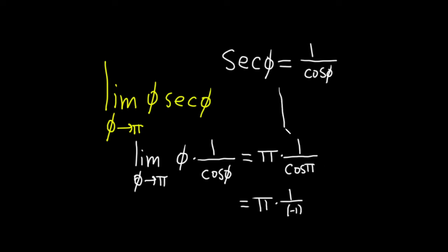On the unit circle, every ordered pair is of the form cosine theta, sine theta. At pi, which is here, the x-coordinate is negative 1. Since cosine is the x-coordinate on the unit circle, the cosine of pi is negative 1.